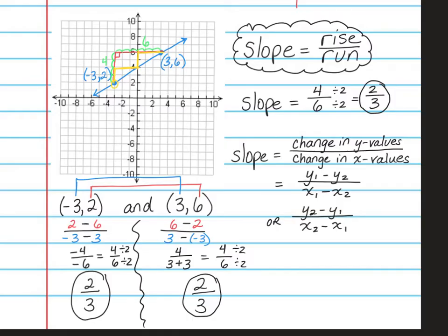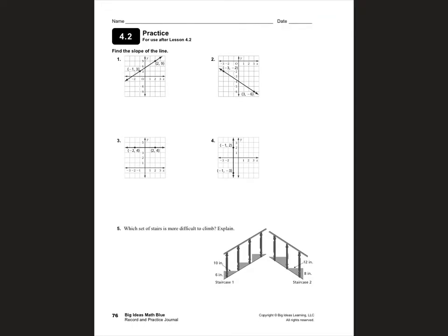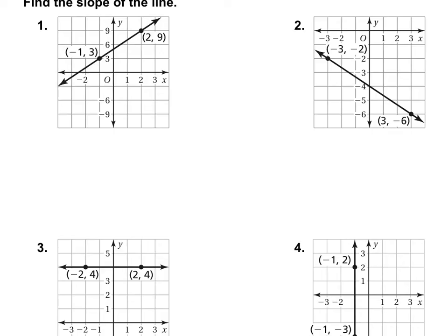That is how you use the formula. Let's do some practice problems. Please turn to page 76 in your RPJ. Number 1 is on a graph, so we just need to draw our right triangle between the two points, going straight up and straight over. Counting the boxes: 1, 2 up, and 1, 2, 3 over. This is a positive slope, so the slope is positive 2 over 3.